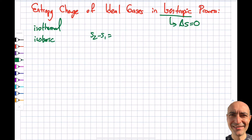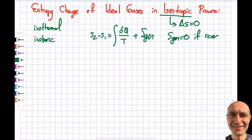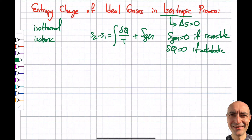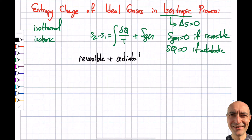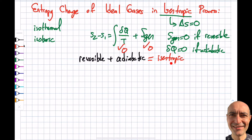Going back to the entropy generation principle: S_gen equals zero if the process is reversible. If the process is adiabatic, then Q equals zero. So if a process is both reversible and adiabatic, both terms on the right-hand side are zero, giving us an isentropic process. Note: if a process is isentropic, it does not necessarily mean it must be reversible and adiabatic — but if it is reversible and adiabatic, it is isentropic.